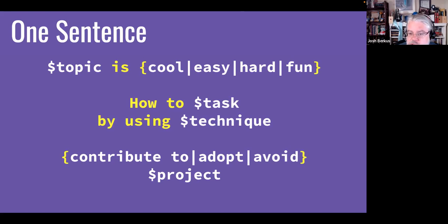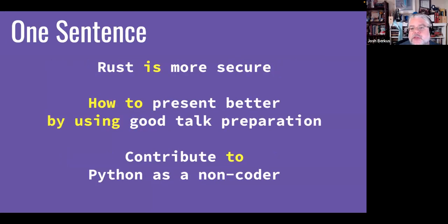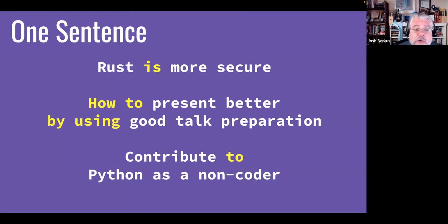Three very common sentence structures for a topic summary are: 'some topic is cool/easy/fun/hard/terrible'; 'how to do something by using something else'; or 'contribute to / adopt / avoid / stamp out something.' Examples: 'Rust is the more secure programming language'; 'How to present better by using good talk preparation'; or 'Contribute to Python as a non-coder — opportunities to contribute in areas that are not writing Python or C code.'